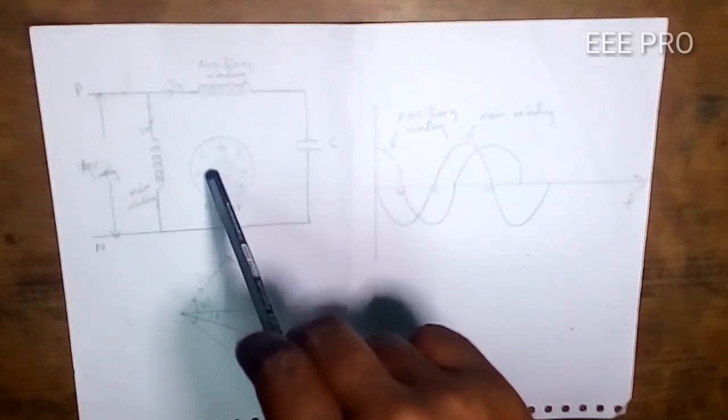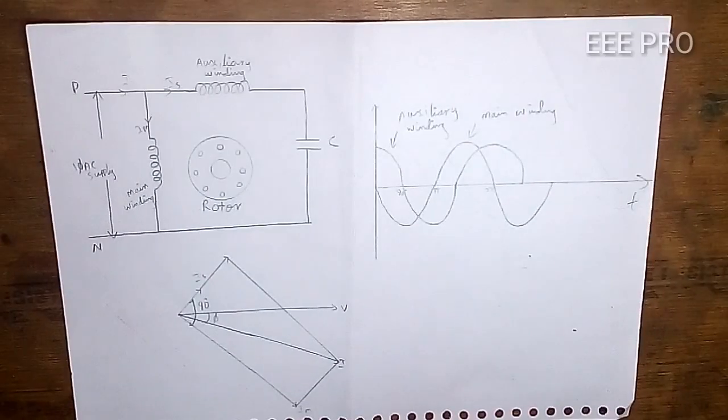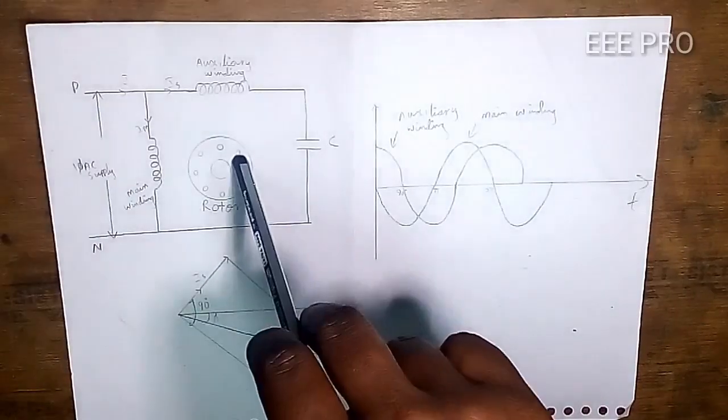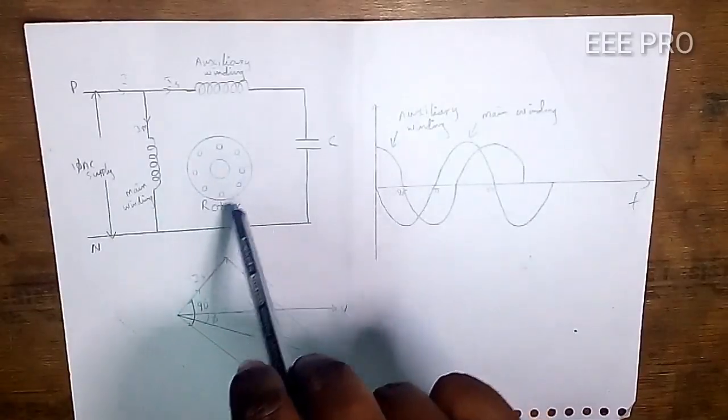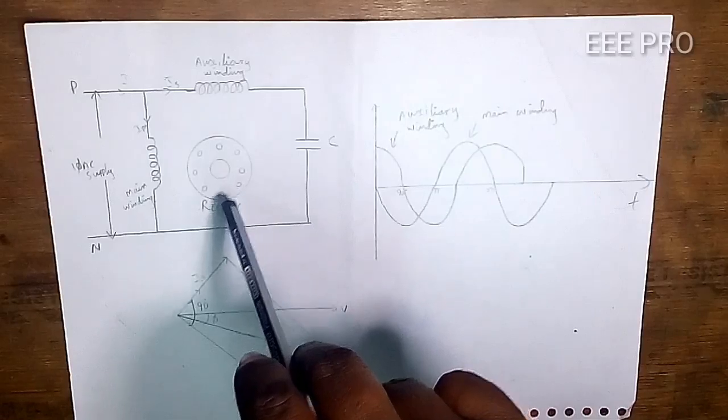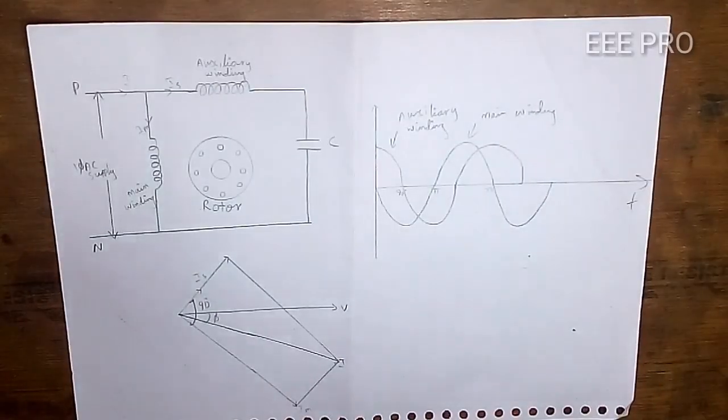The induced EMF causes current to flow in the rotor. This current produces MMF in the rotor. The stator magnetic field and rotor magnetic field interact, causing the rotor to rotate.